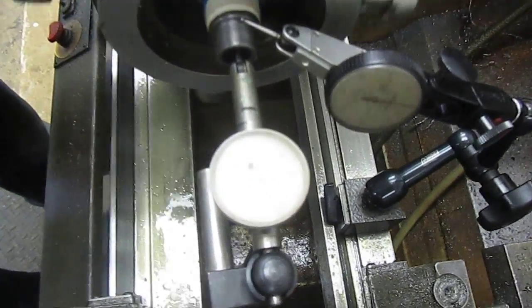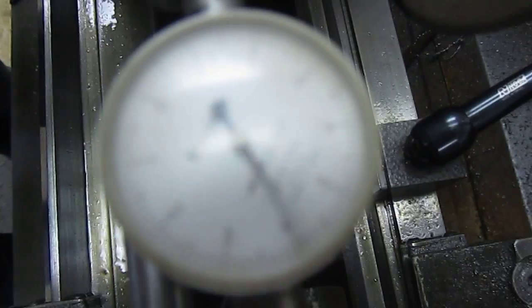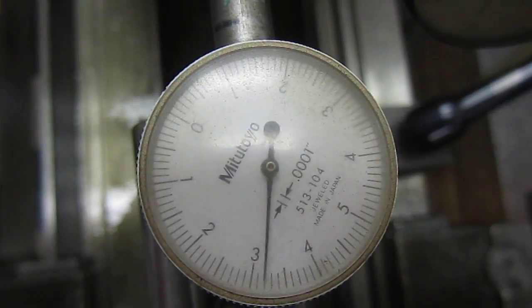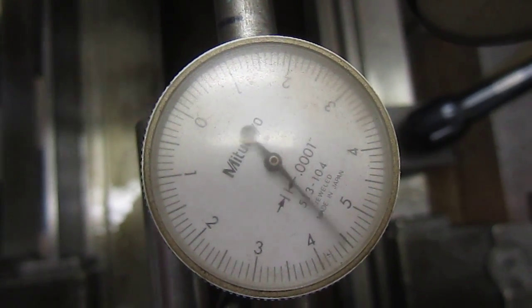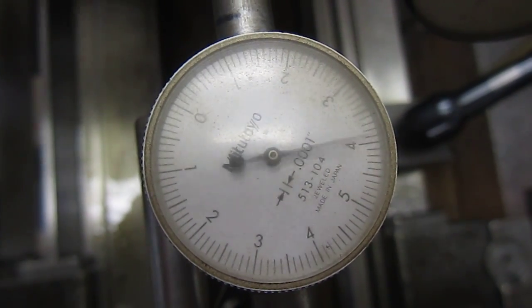The indicator inside the bore is one ten-thousandth, and as we're spinning it you can see that there is roughly 1 to 2 ten-thousandths of runout.